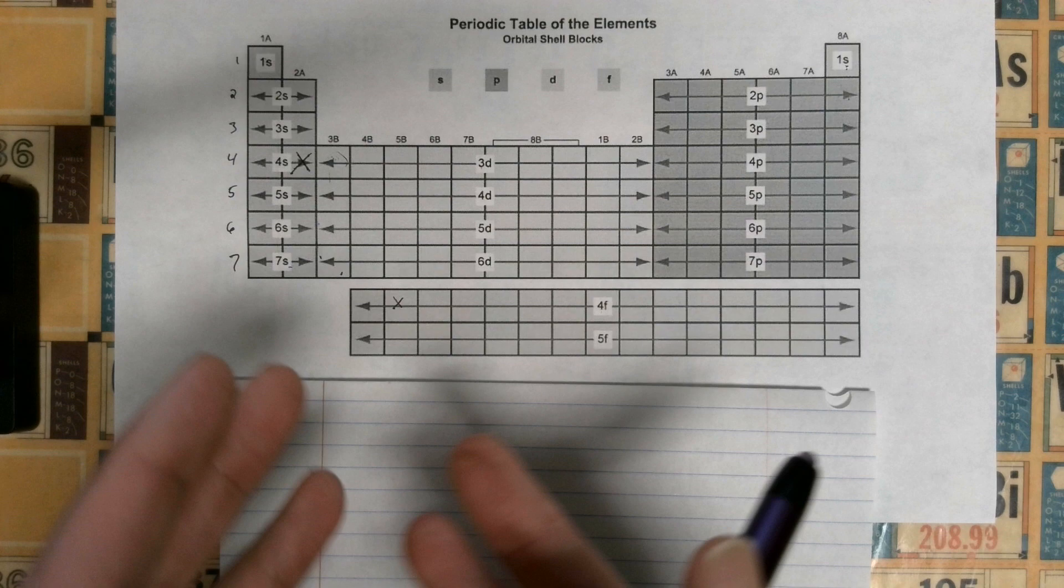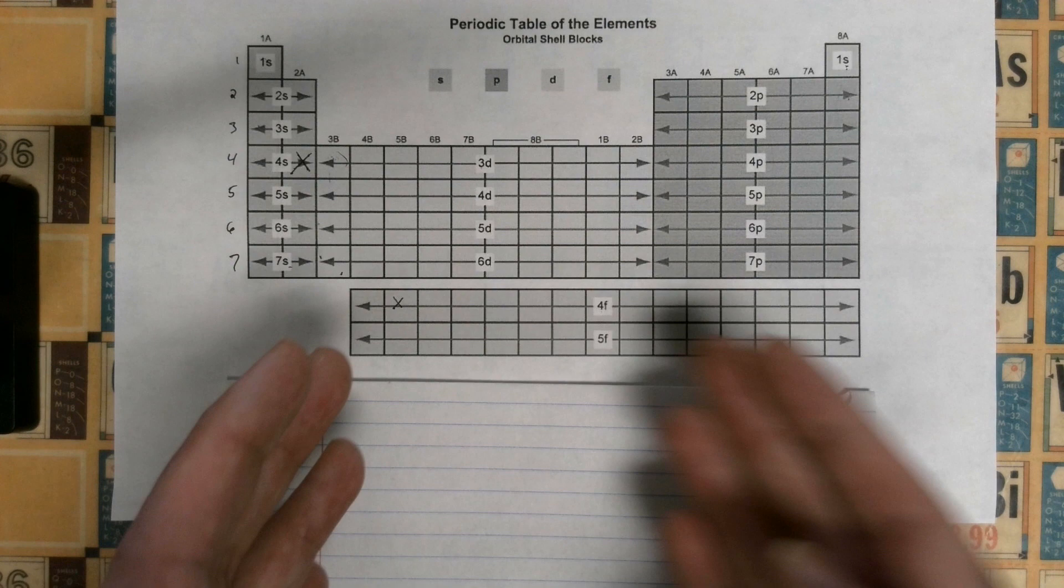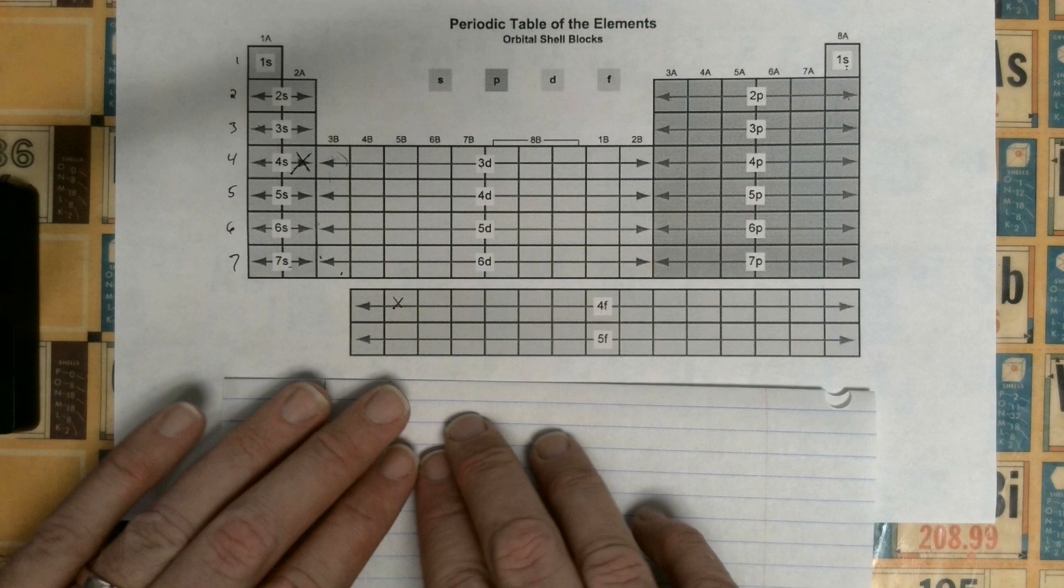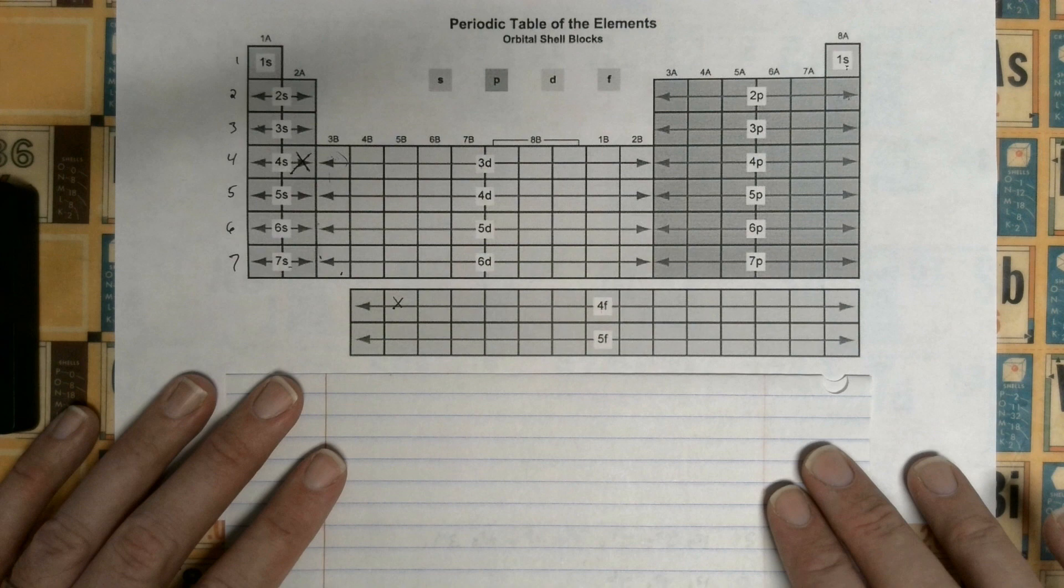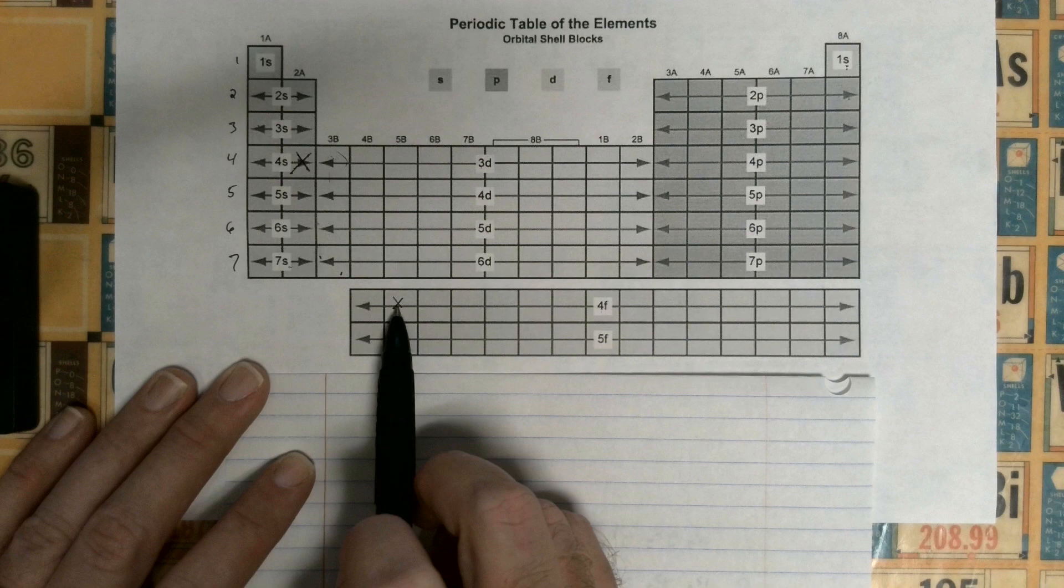We do it like this to make the periodic table fit on a page of paper. If we put them there, it would make it really long and all the boxes would be really tiny, so it's more out of convenience and practicality than any other reason.